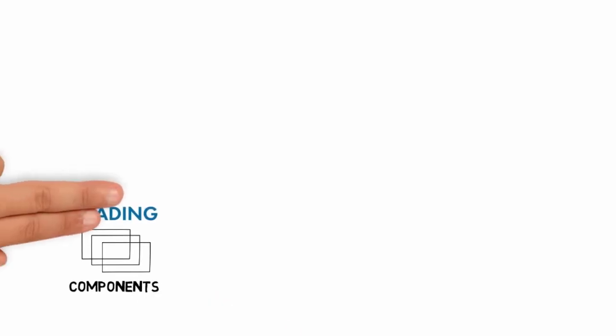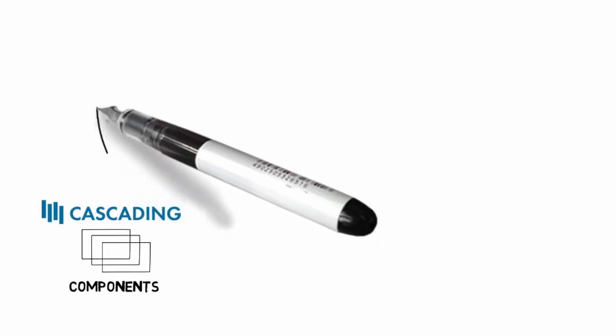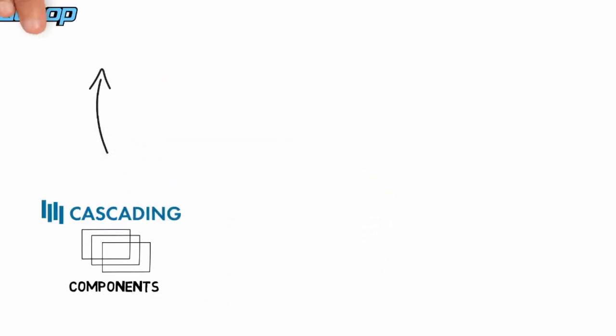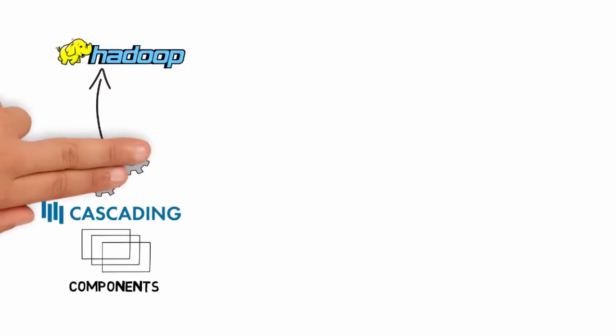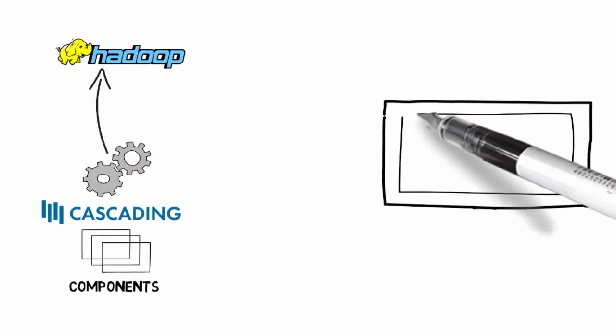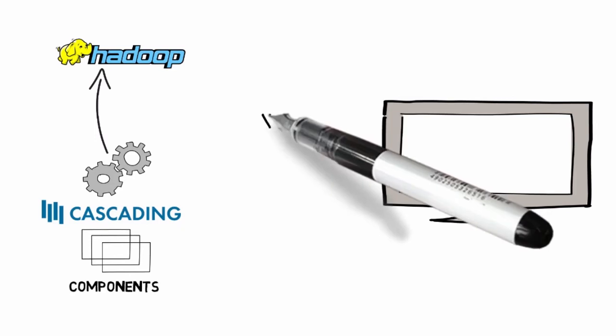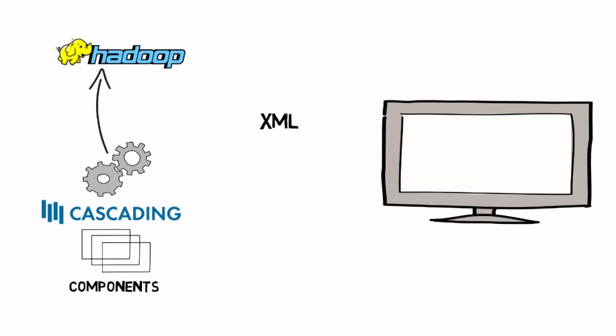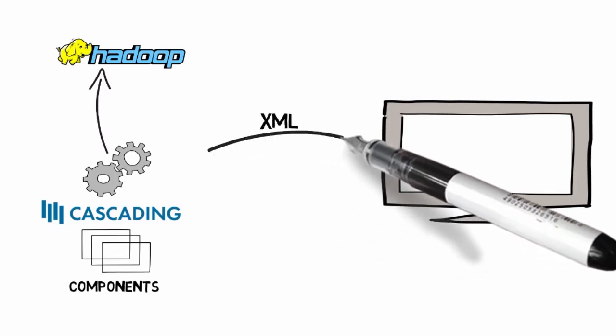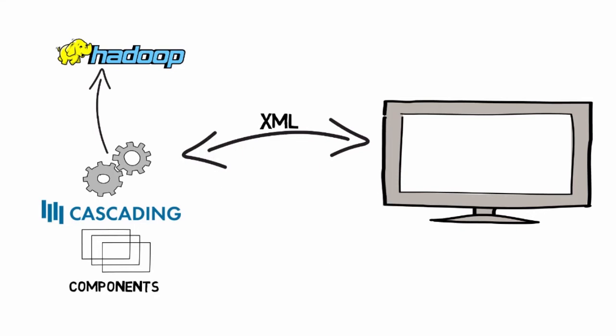The architecture of Hydrograph is pretty simple. There's a set of predefined code building blocks called components. Components are developed with a cascading back-end for computations on Hadoop — we call this the engine. There's also an Eclipse-based plug-in for our graphical user interface front-end, and finally an XML layer to orchestrate execution and bridge the front-end GUI representation with the back-end engine.